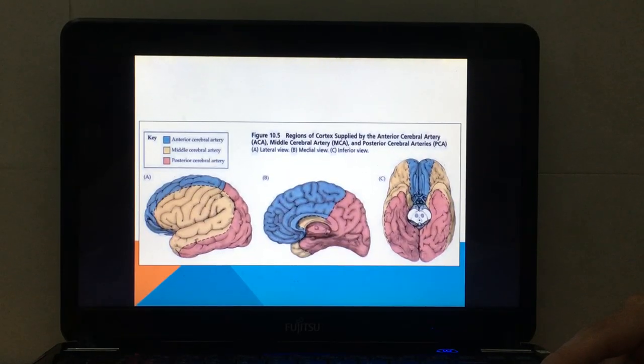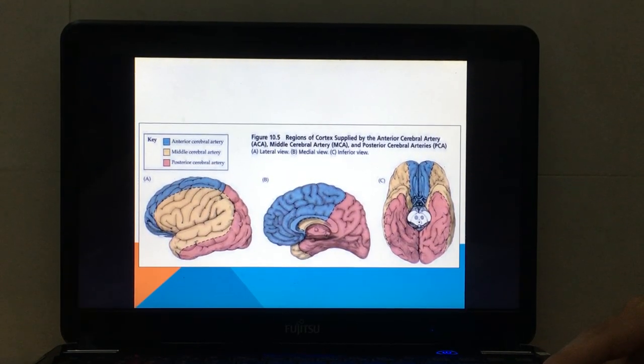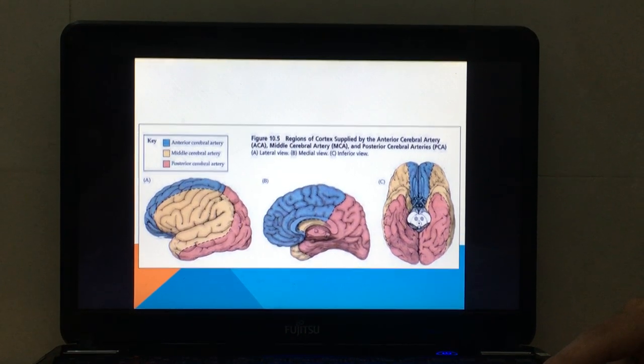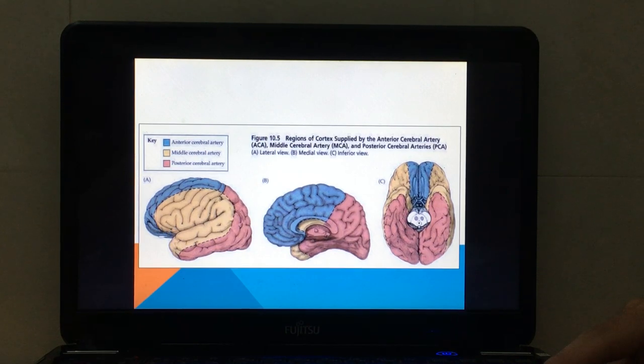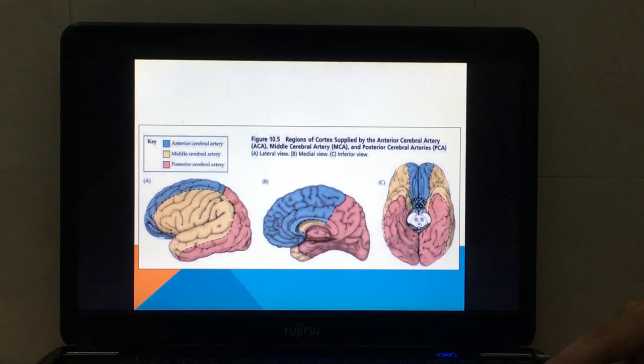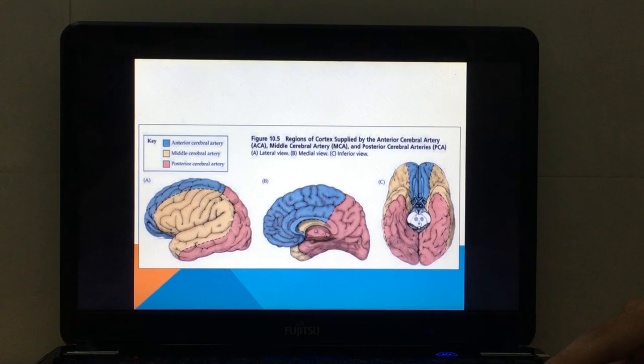Blockage of one cerebral artery will have characteristic effects based on the region of the brain supplied by the vessel. The anterior cerebral artery supplies the medial surface of the cerebrum, the middle cerebral artery supplies the lateral surface...